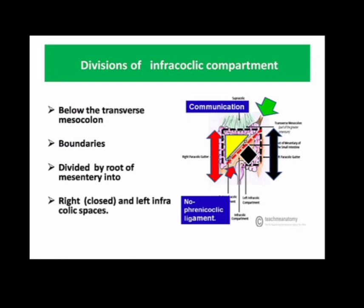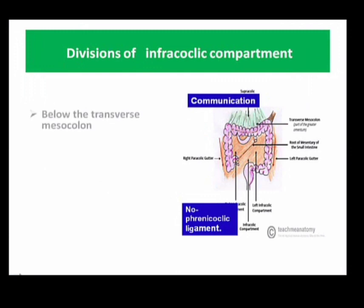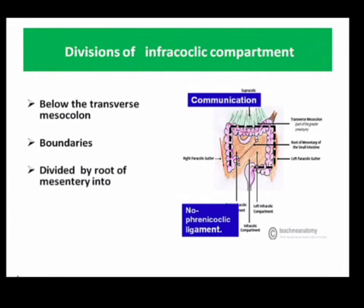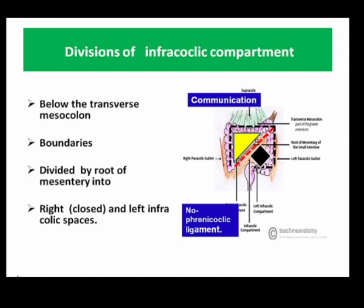This MCQ has been taken from the infracolic compartment of the peritoneal cavity, which lies below the transverse colon and is mesenteric. It is bounded on the right by ascending colon, superiorly by transverse colon and its mesentery, on the left by descending colon, and inferiorly by sigmoid colon. This quadrangular space is divided by the root of the mesentery into two compartments: right upper triangular and left lower quadrangular. The lateral boundary of the triangular compartment is formed by the medial paracolic gutter.